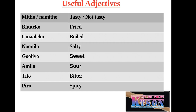Final review: mito means tasty, na-mito means not tasty. Buteko means fried, umaleko means boiled, nunilo means salty, gulio means sweet, amilo means sour, tito means bitter, and piro means spicy. Thank you for watching.